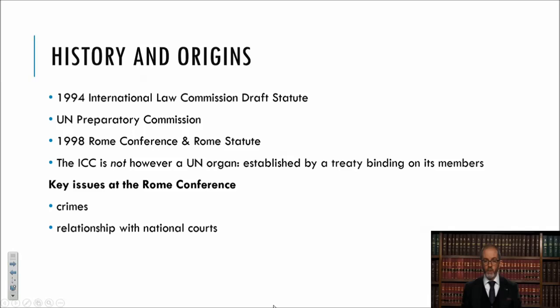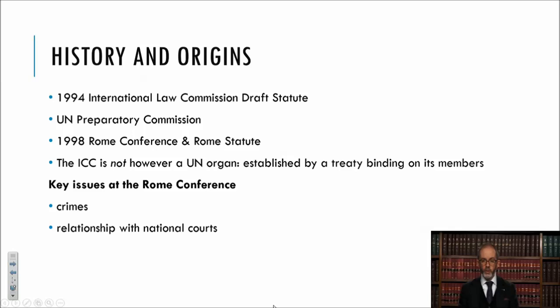There was also the question of what should be the correct relationship between this international criminal court and national courts. Would it be a court with primacy — a court of primary jurisdiction as the ICTY and ICTR had been, which could take priority in cases and remove them from a national jurisdiction? Or should it have a more cooperative or deferential relationship towards national jurisdictions — a court of last resort that only acts when national courts cannot? The word that came to be used to encapsulate that relationship was complementarity: the court should not have primacy over national jurisdictions, but should complement them.